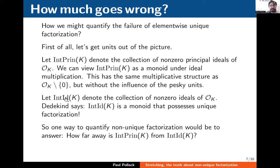Saying that O_K is not always a UFD says this monoid does not always enjoy unique factorization. But there's another natural monoid: the collection of all non-zero ideals of O_K, which is bigger. That monoid does always enjoy unique factorization — that's exactly Dedekind's theory. One way to quantify non-unique factorization is to ask how far the first monoid is from the second. Since the first lives inside the second, a natural measure is some kind of quotient.